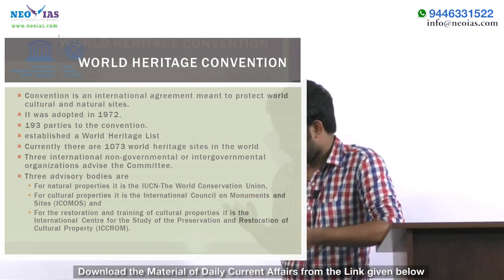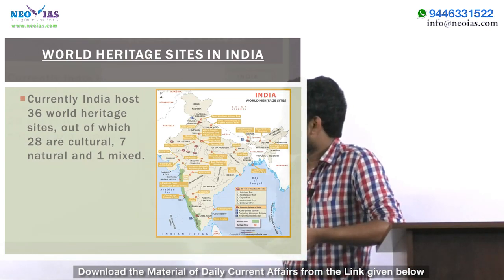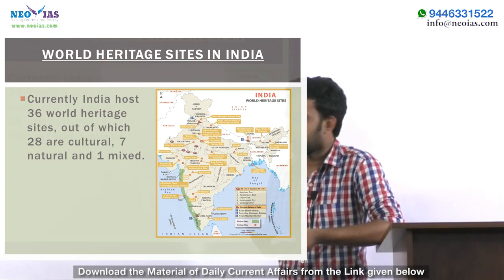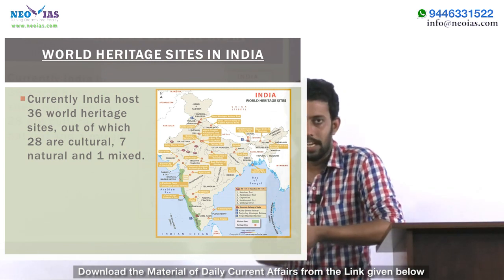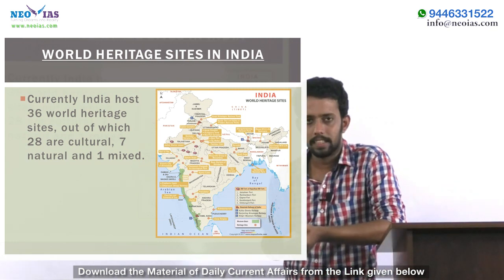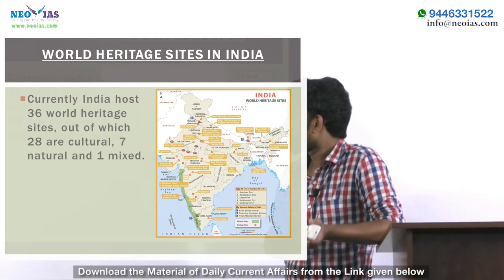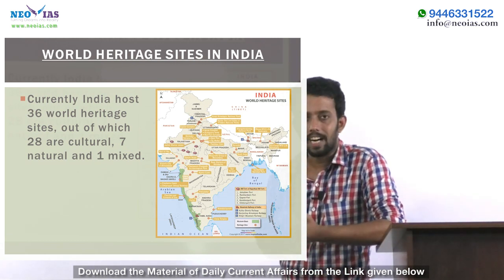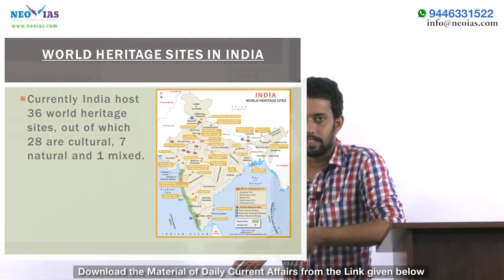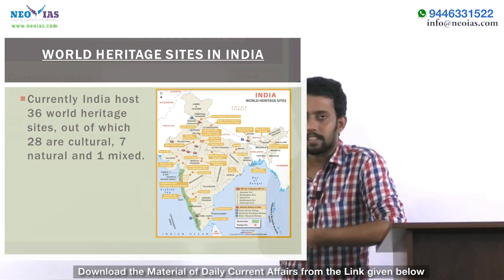India has 36 World Heritage Sites, out of which 28 are cultural, seven are natural, and one is mixed. The mixed site is currently located in Sikkim. The recent addition to the cultural sites was the Walled City of Ahmedabad in the year 2017. The nodal organization for recommending World Heritage Sites in India is the Archaeological Survey of India.